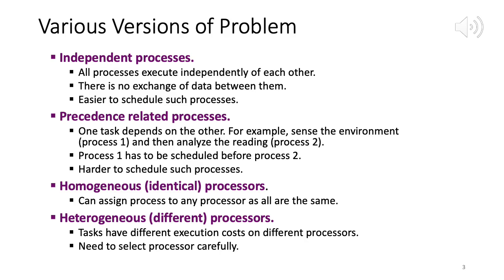Scheduling algorithms for heterogeneous processors are the most complex. The tendency to put everything on the fastest CPU results in sequential scheduling and loses the parallel processing advantage. You must balance: assign processes to both fast and slow CPUs. The trade-off is that parallel processing is achieved, but tasks on slower processors take longer. You need a middle ground — use fast processors as much as possible while still utilizing slow ones.